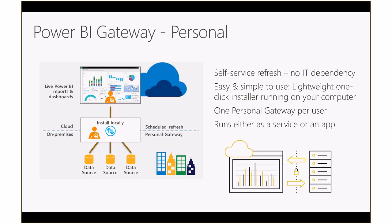The personal gateway is available if you're not setting up a centralized solution — it's for your own datasets that you're publishing, where you just want to refresh on your own without any overhead of managing anything. You can install it locally on your laptop or workstation, and it'll run for scheduled refresh. The machine hosting the personal gateway has to be on for scheduled refresh to work. Also, you can only do scheduled refresh with the personal gateway — you can't use Direct Query or Live Connections with it.